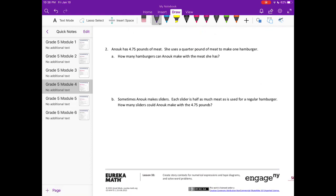Number two. Anouk has four and seventy five hundredths pounds of meat. She uses a quarter pound of meat to make one hamburger. How many hamburgers can Anouk make with the meat she has? This is how much she has: four and seventy five hundredths. She uses a quarter, or one fourth pound of meat to make one hamburger. One fourth is also equal to 25 hundredths.